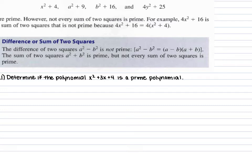If you don't have any factors that work, then you have a prime polynomial, which means it cannot be factored. If we look at Example 1, we're determining whether the polynomial x squared plus 3x plus 4 is prime or not.